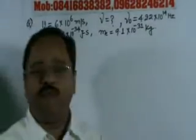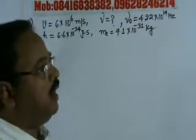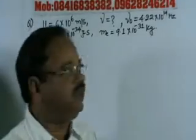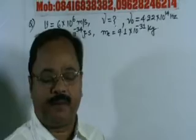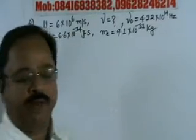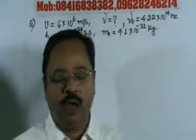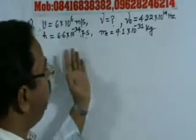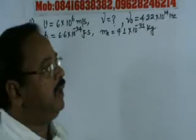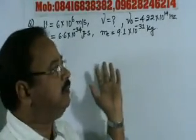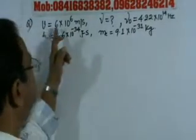In this problem, photoelectrons are to be emitted from a potassium surface with a speed of 6×10^6 meters per second. What frequency of radiation must be used? The speed of photoelectrons emitted from potassium surface is given as 6×10^6 meters per second. The frequency of the incident radiation we can calculate.